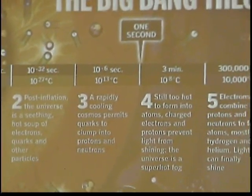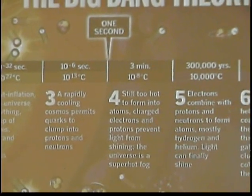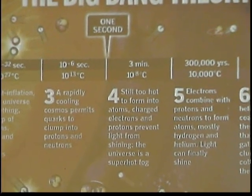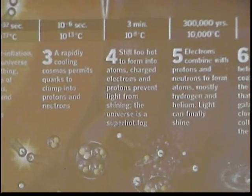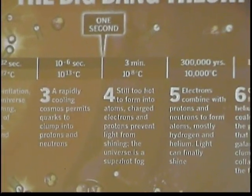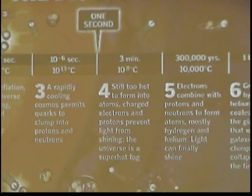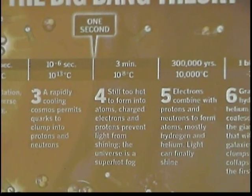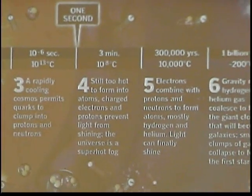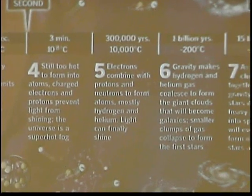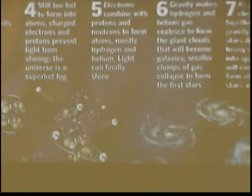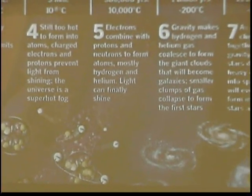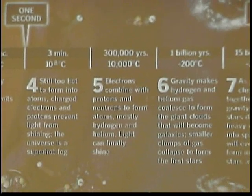Then it cools and you're at a millionth of a second after the Big Bang — still 10 to the 13 degrees. For the first time, the quarks congealed into protons and neutrons. Before that, it was so hot that the protons and neutrons would have melted. Here, they're actually cool enough that you begin to form protons and neutrons. Now we're a whopping three minutes after the Big Bang, and those protons and neutrons begin to form nuclei — things like deuterium, lithium, and helium nuclei.